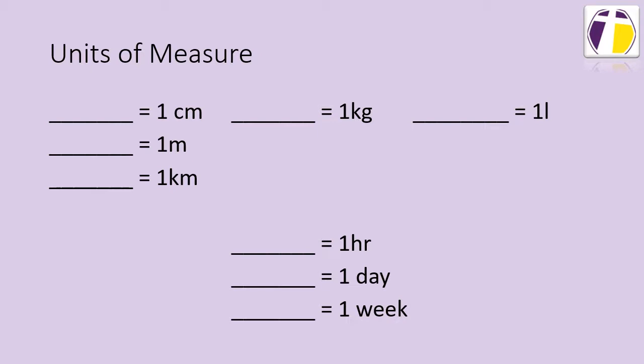So starting off with length, one centimeter is the same as 10 millimeters. One meter is the same as 100 centimeters. One kilometer is the same as 1000 meters.